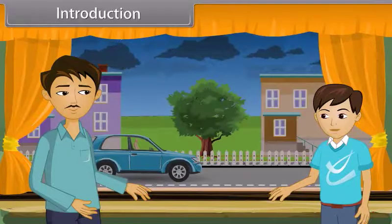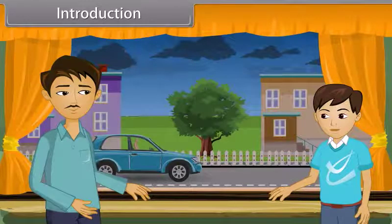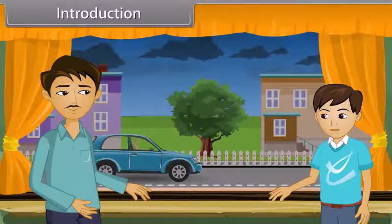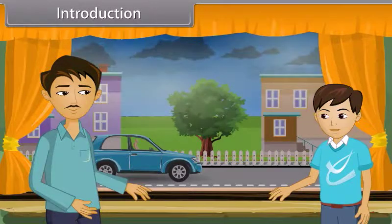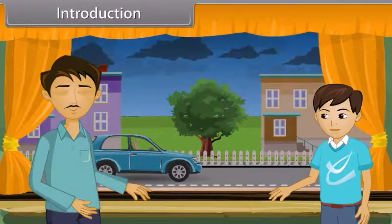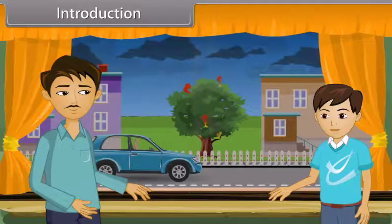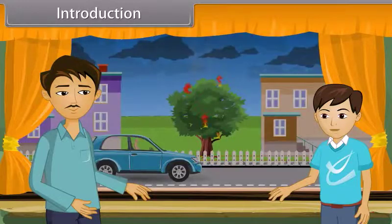Introduction. Prince and his father are standing at the window, viewing outside. It is rainy weather. Suddenly, lightning occurs and falls down. Prince observed that the tree on the road catches fire due to lightning. He asked his father why the tree catches fire and the car remains safe on the road.